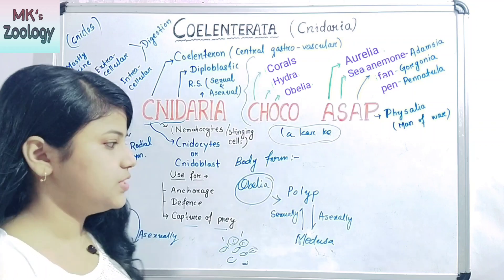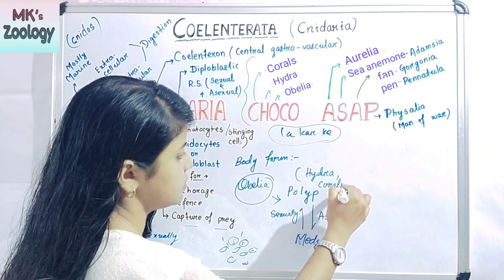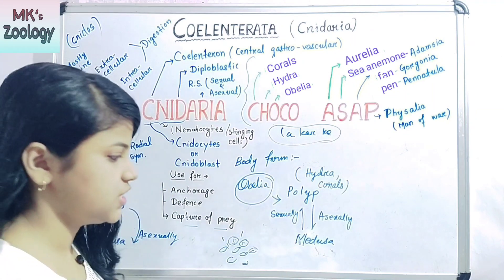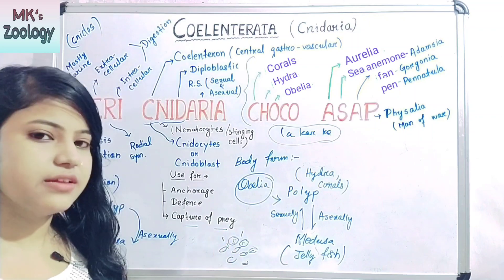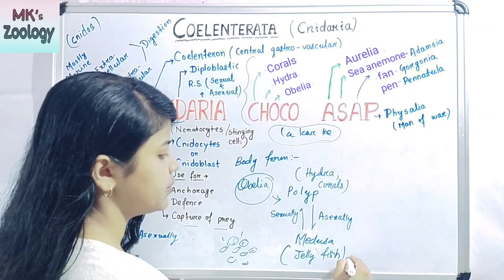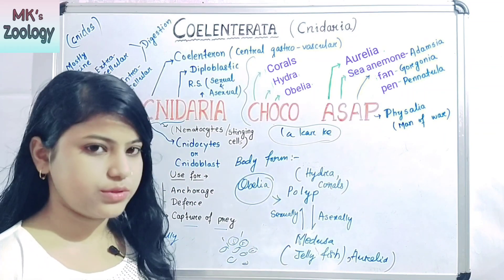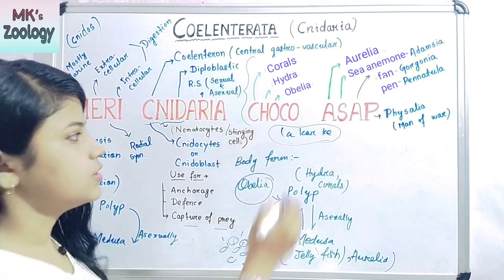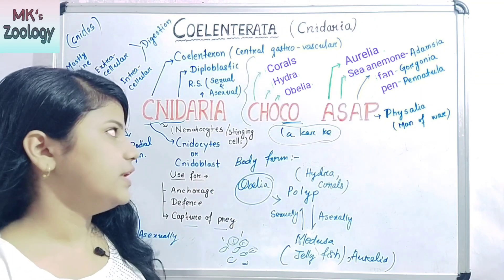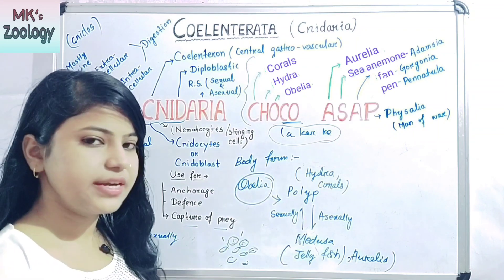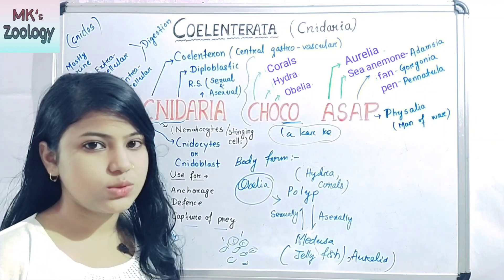The example of the polyp form is Hydra and corals. The example of the medusa form is jellyfish — you may have heard about jellyfish. Jellyfish are examples of medusa. Another example of medusa is Aurelia. Hydra and corals are polyps, which only show asexual type of reproduction, while Obelia shows both.